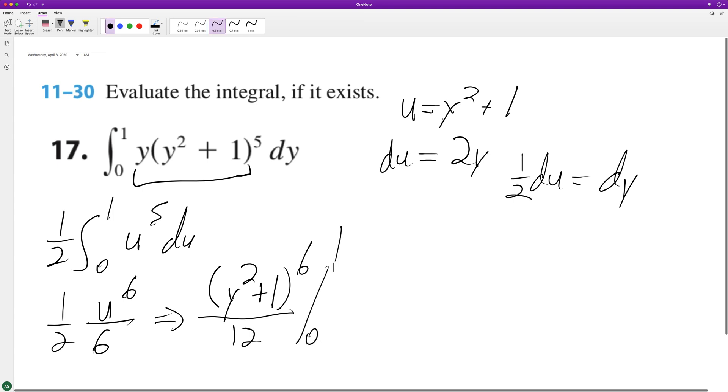All right, so starting off with one: two raised to the six is sixty four divided by twelve. And then plug in zero, we end up with one over twelve.